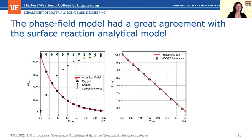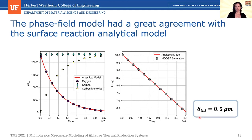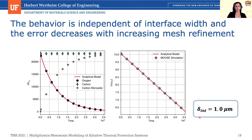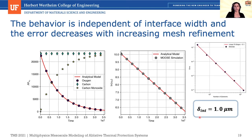An important outcome was discovering that simulations were dependent on interface width, which we do not want. We normalize the reaction rate constant with the interface width to obtain interface-width-independent results. The scattered dots are the simulation and the red line is our analytical model. On the left, the total oxygen decreases with time. We plot the logarithm of number density and compare slopes to get our error. Results are now independent of interface thickness — tested with both half-micron and one-micron interface widths. Error decreases with mesh refinement, with a log-log slope of negative 2.1.